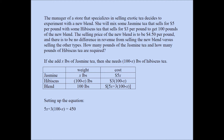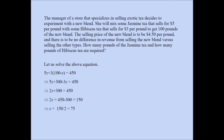So now we have our equation: 5x plus 3 times (100 minus x) equals 450. To solve for x, we distribute 3 over (100 minus x), giving 300 minus 3x. Then 5x minus 3x is 2x, and we still have 300 and 450. Subtracting 300 from both sides gives 2x equals 150, so x equals 75.